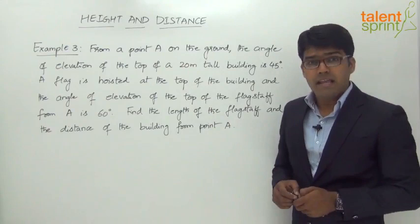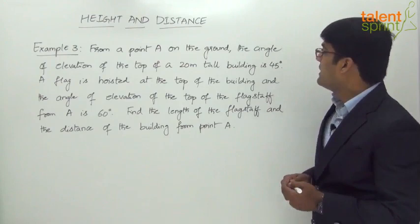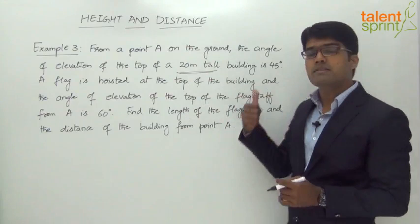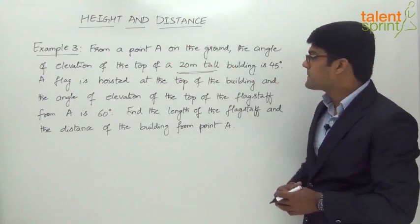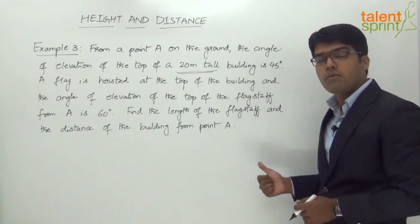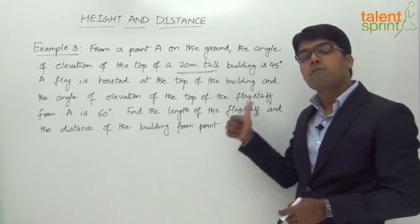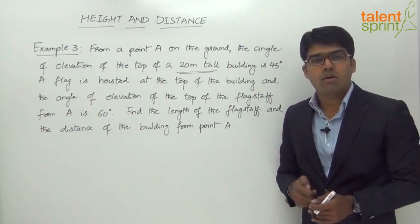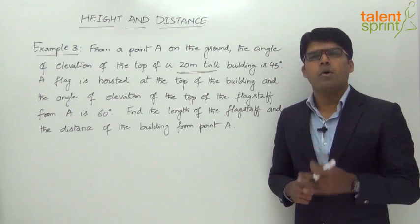The question reads: from a point A on the ground, the angle of elevation of the top of a 20-meter tall building is 45 degrees. So the height of the building is 20 meters and the angle of elevation from point A on the ground is 45 degrees. A flag is hoisted at the top of the building and the angle of elevation of the top of the flag staff from A is 60 degrees.